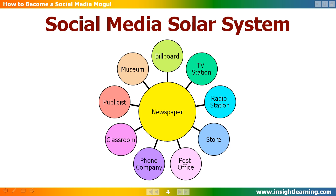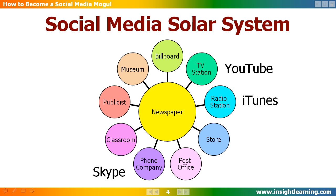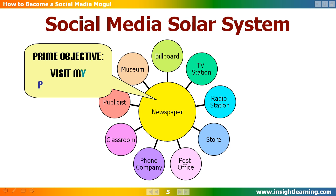Notice that each satellite is a different media outlet. Your radio station is an audio podcast housed at iTunes or an internet radio site. Your television station is located at YouTube or a similar video hosting service. Skype is your telephone company, allowing you to reach out and touch someone anywhere on the planet. And the correlations go on and on — for every traditional media outlet, there is, or soon will be, an internet correlation.